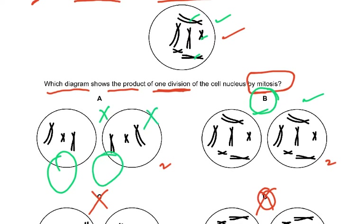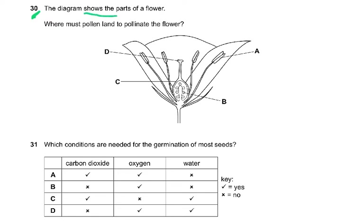Question 30: the diagram shows parts of a flower — where must pollen land to pollinate the flower? Pollination is the transfer of pollen from the anther to the stigma. In the diagram, A is the anthers, B is the ovule, C is the style/ovary, and D is the stigma. Pollen must land on the stigma, so the answer is D.